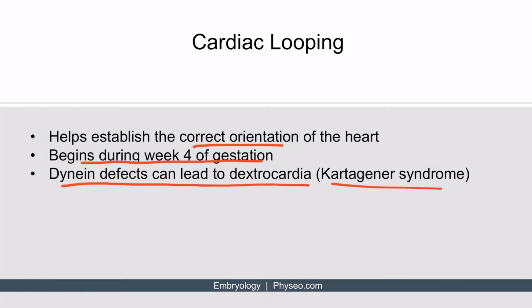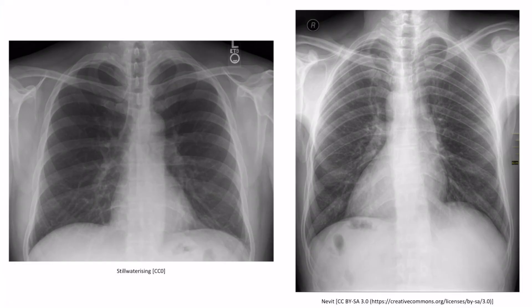We cover this in much more detail in our biochemistry section. Here we have two chest x-rays. On the left, we can see what normal looks like — notice that the heart is oriented towards the patient's left side. On the right, we can see a chest x-ray of dextrocardia. As you can see, the orientation of the heart is reversed and is now towards the patient's right side.